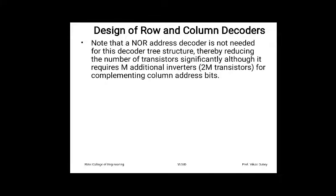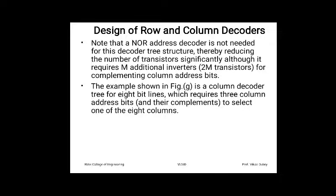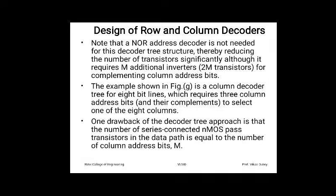In the binary tree decoder, a NOR address decoder is not needed, thereby significantly reducing the number of transistors. However, it requires M additional inverters — since each inverter consists of 2 transistors, that is 2M extra transistors — for complementing the column address bits. The example in the figure is a column decoder tree for 8 bit lines, requiring 3 column address bits and their complements to select one of the 8 columns.